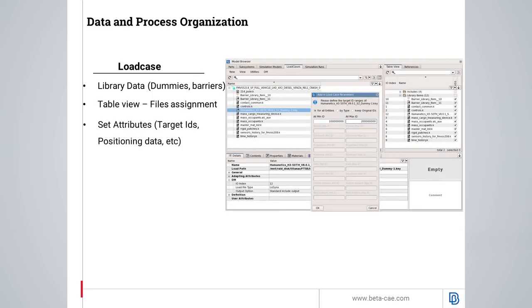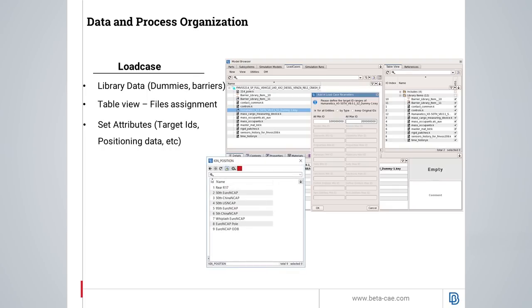The set of attributes for each load case, such as target IDs and positioning data, can be defined. A list of all the saved positions for a seat or a dummy can be loaded, and the user is able to select one among the available options.